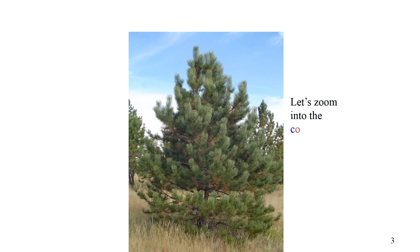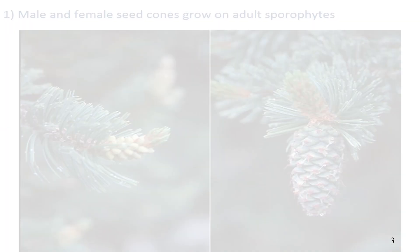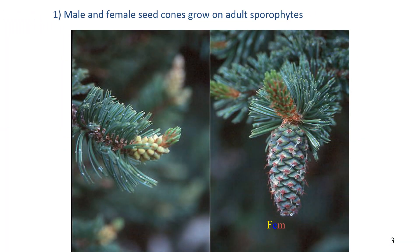Let's zoom into the cones of this sporophyte tree. Male and female seed cones grow on adult sporophyte trees. Pollen grains are produced in the male cone and contain the male gametophyte, which consists of only a few cells.